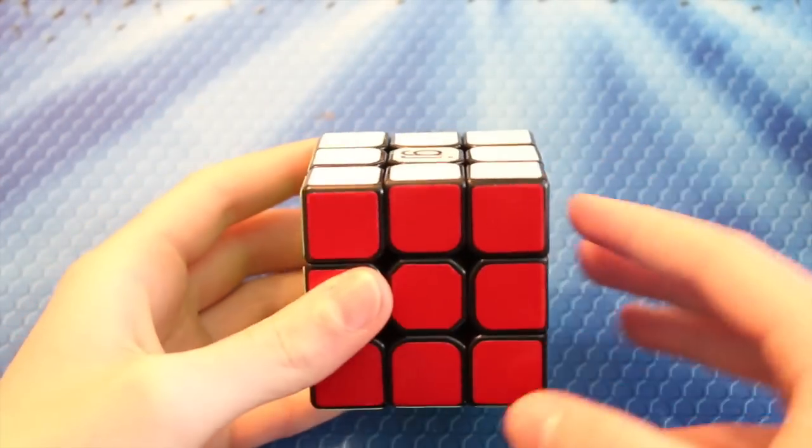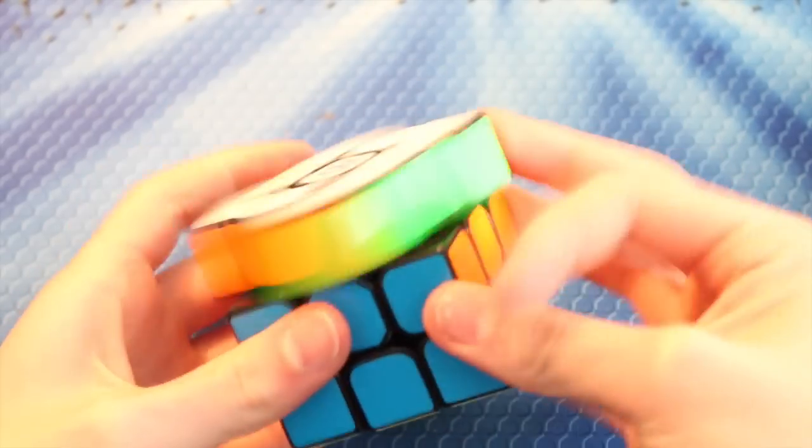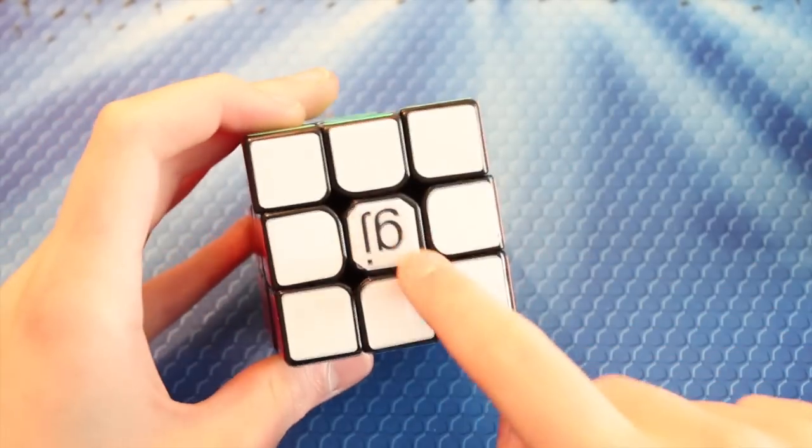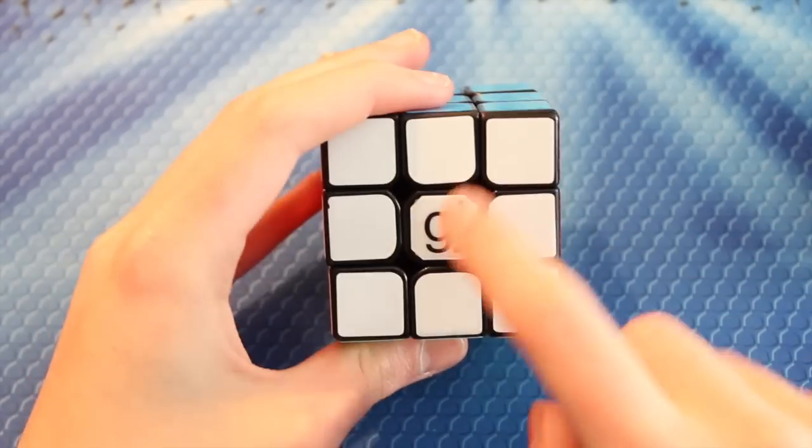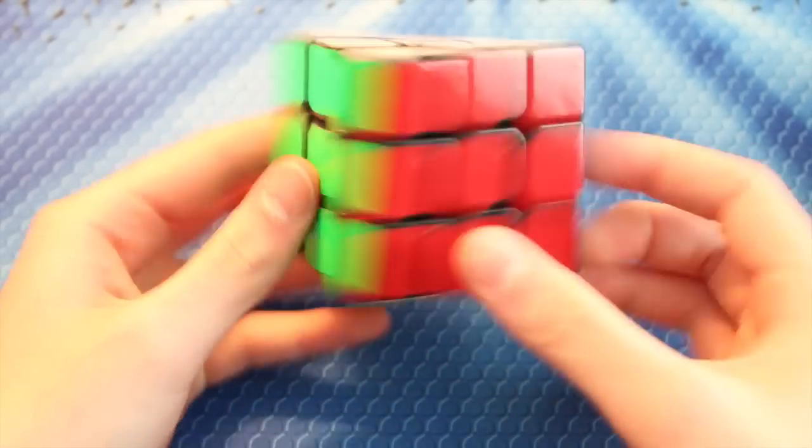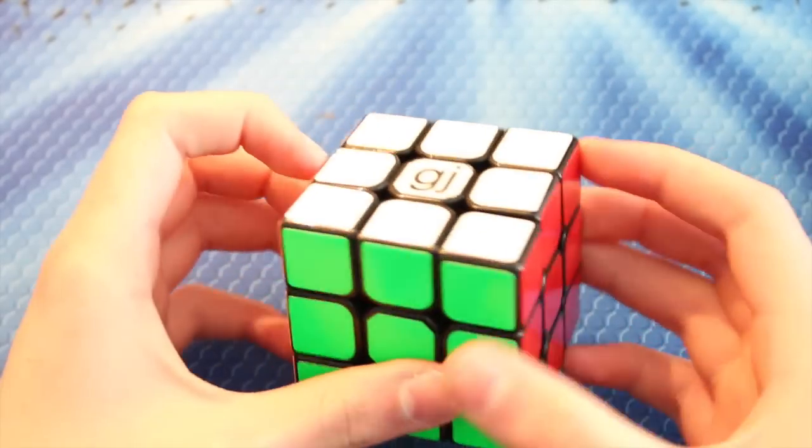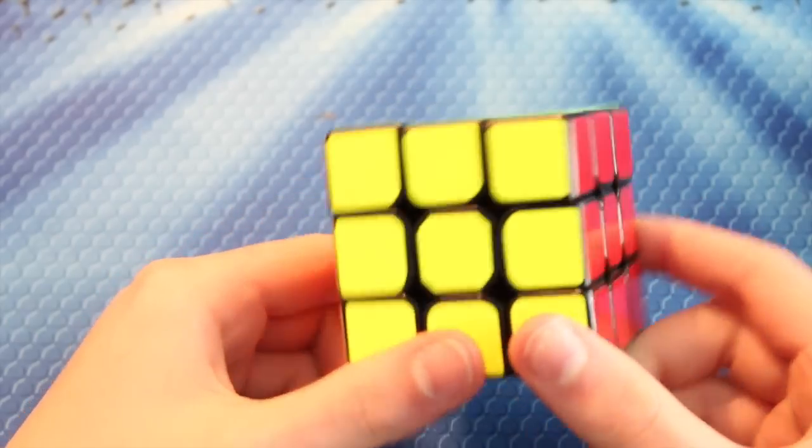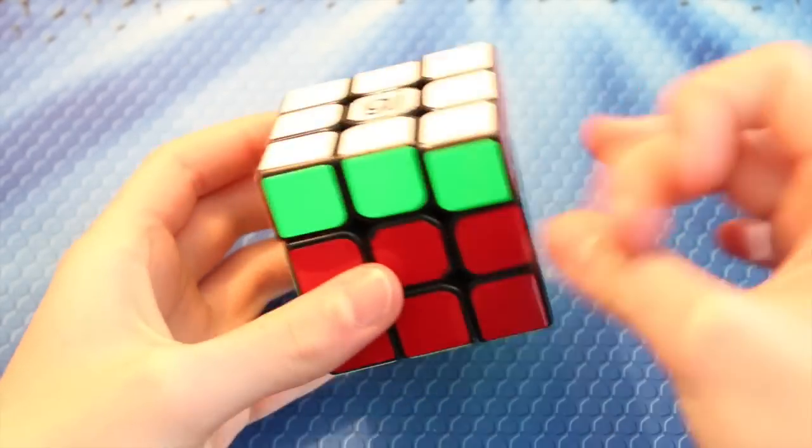And also, one more thing is that I re-stickered my Hualong. I don't actually like the center stickers on this. I don't like how they're cut off like that, but anyways, it's fine. I got the GJ logo on there, and it looks pretty nice. I haven't lubed it yet, though, so gonna have to do that.